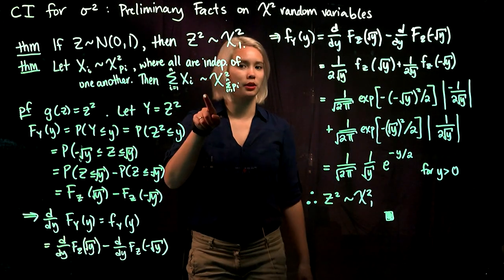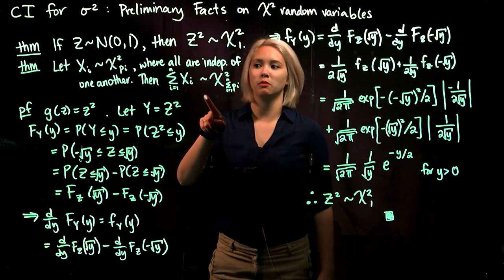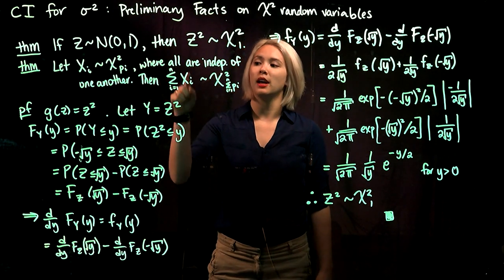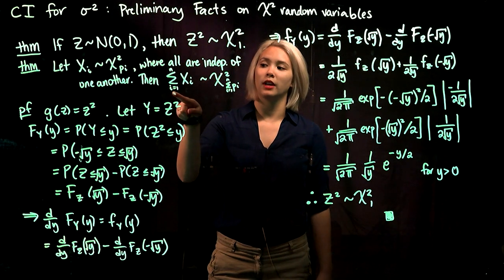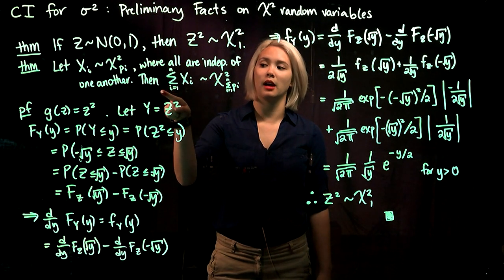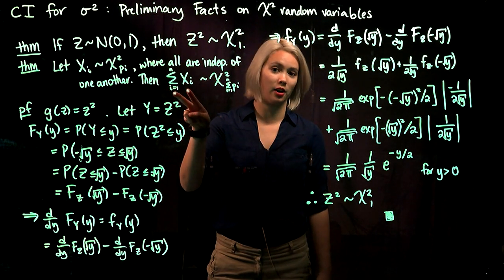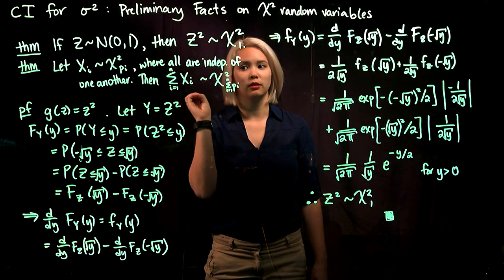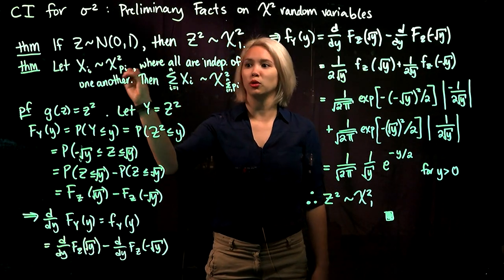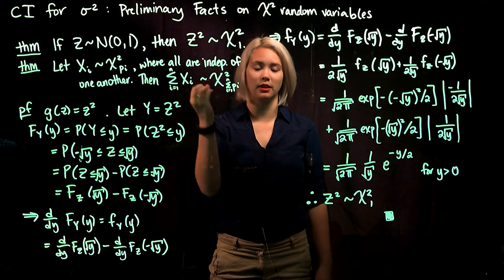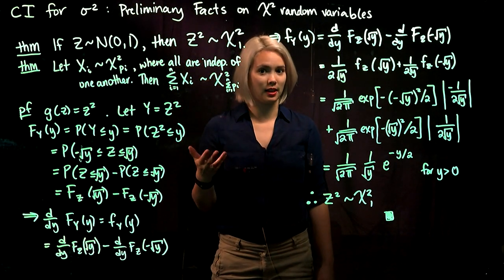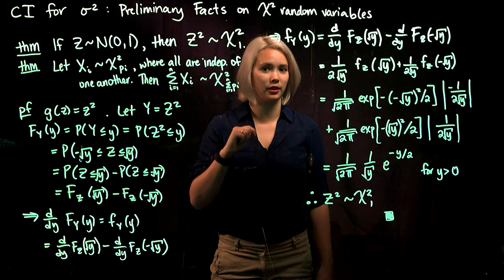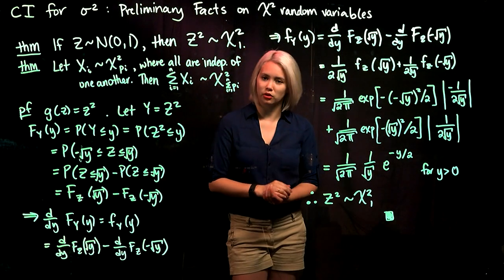To prove the second theorem, it would be pretty straightforward — I would recommend using a moment generating function. The MGF of a sum of random variables is the same as the product of the MGFs. We apply that to these chi-squared random variables, and we'll see that the resulting MGF is that of a chi-squared random variable with the sum of the degrees of freedom.